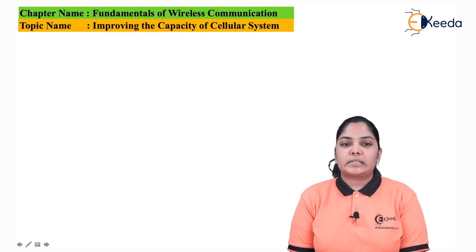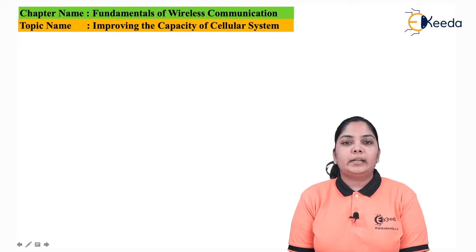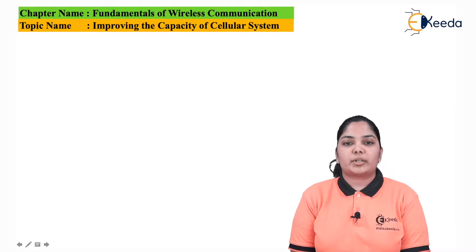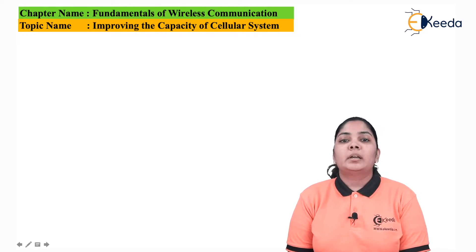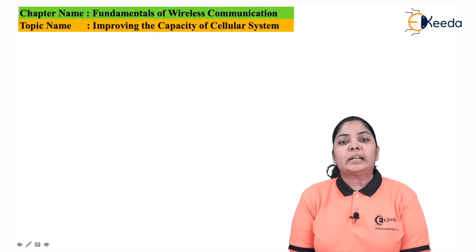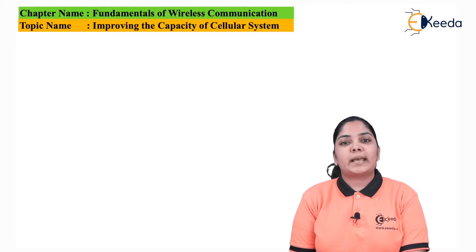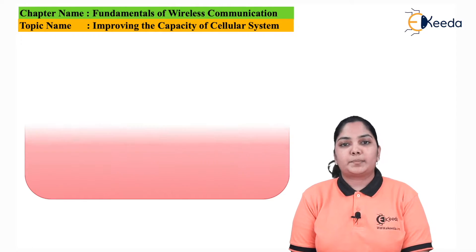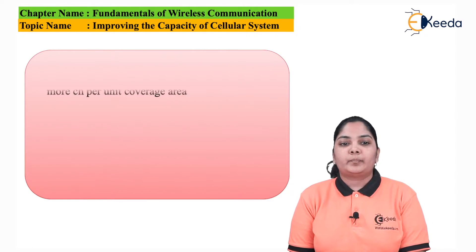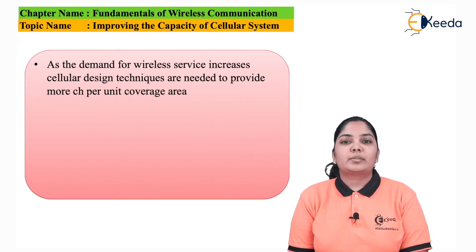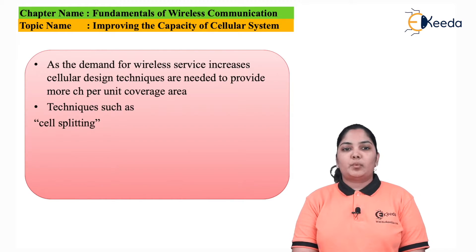As the demand for wireless services increases, in the cellular design, techniques are needed to provide more channels per unit coverage area — meaning more users trying to access the system require enough channels so all users can use the system. There are three techniques which help us improve the capacity: cell splitting, sectoring, and the microcell zone concept. We will see them one by one.